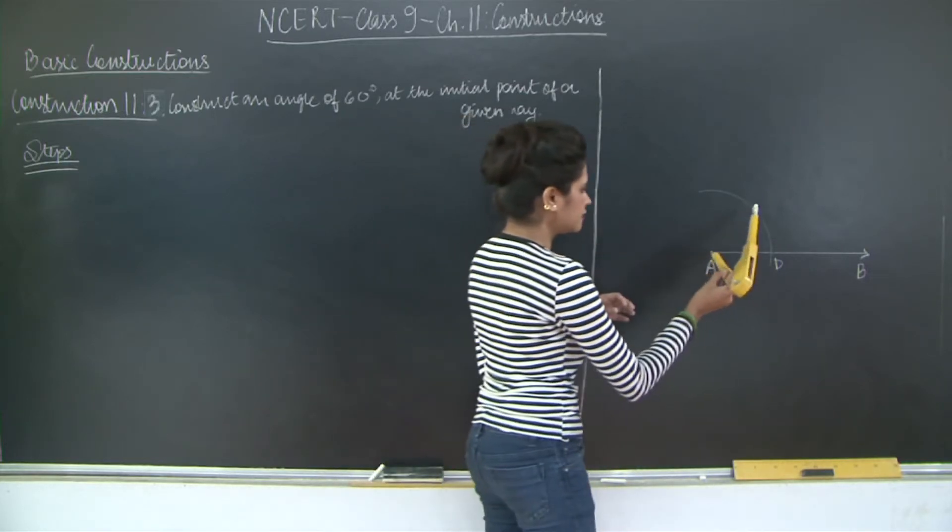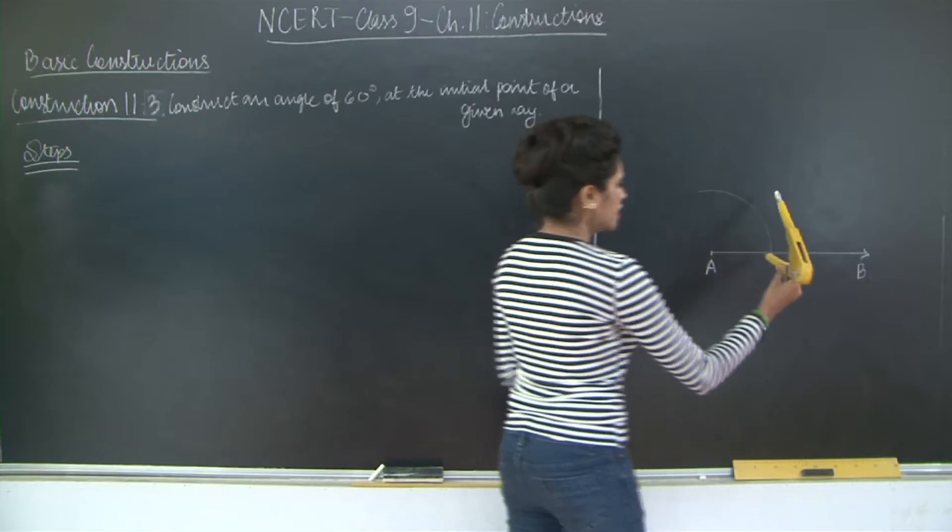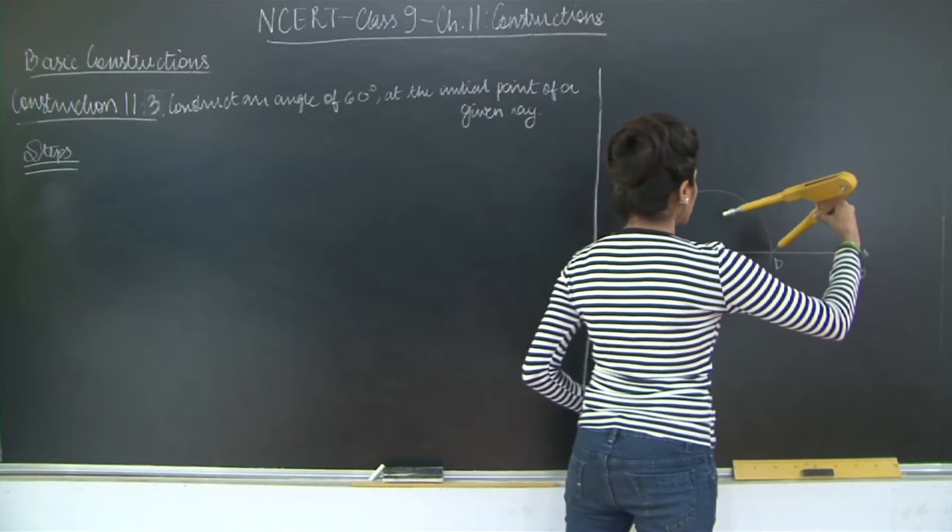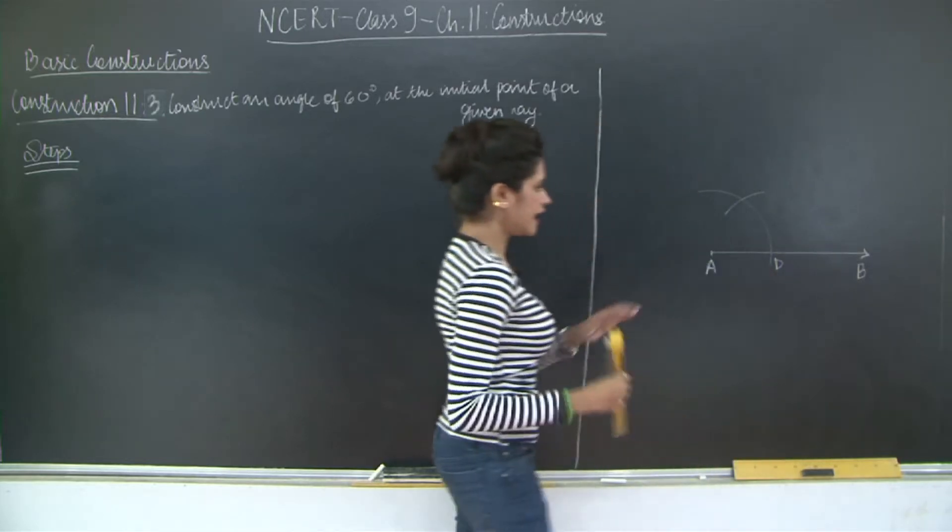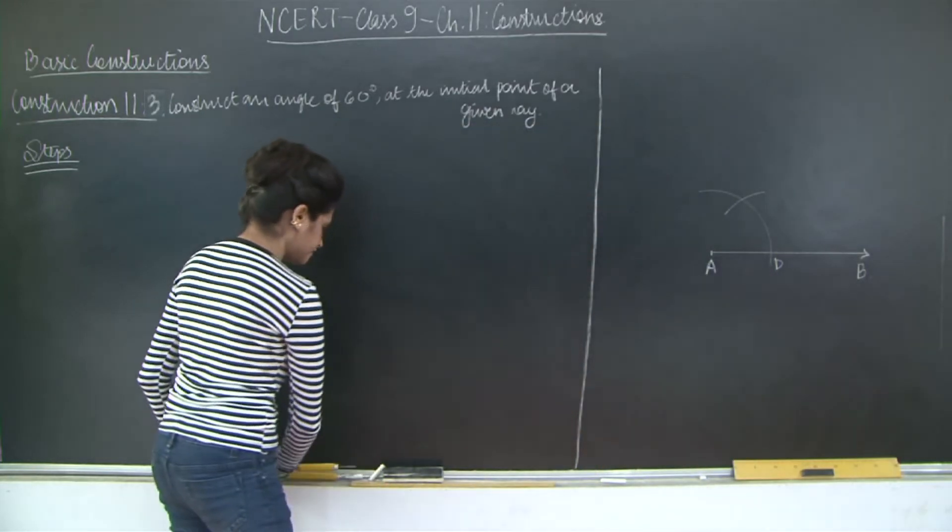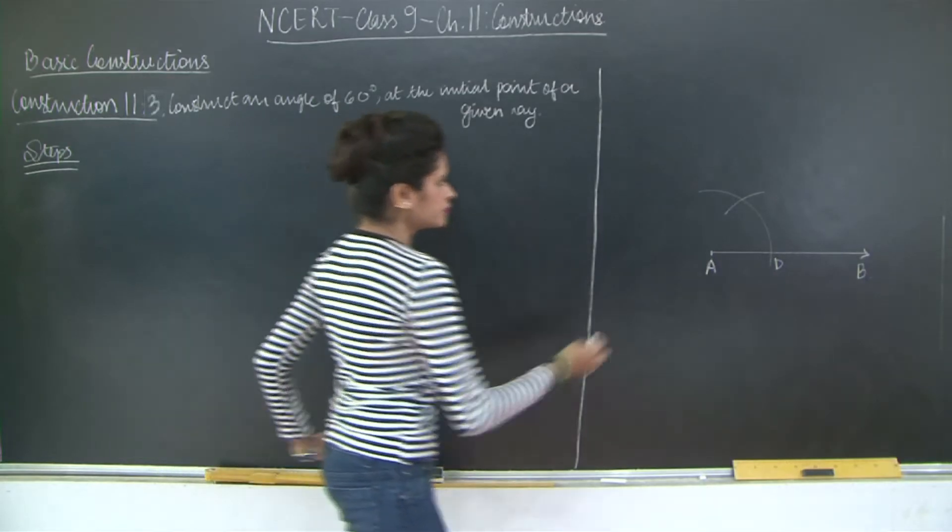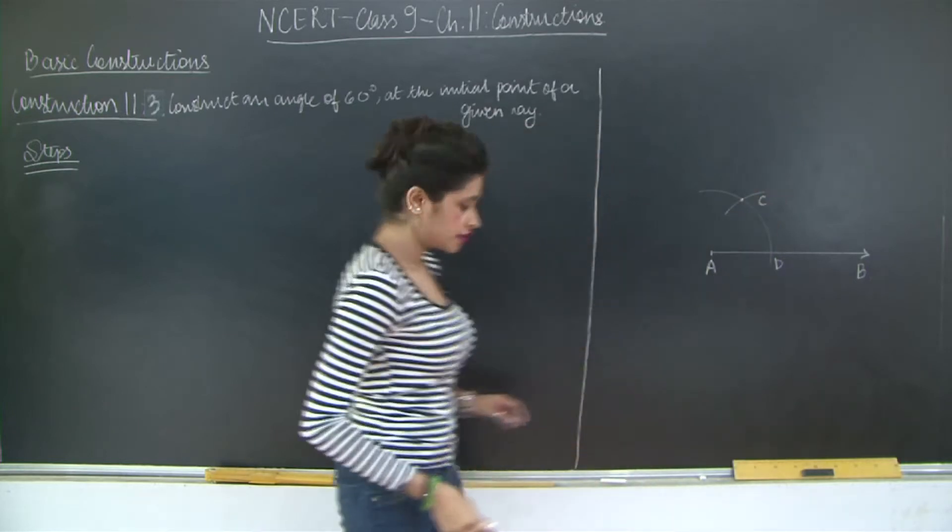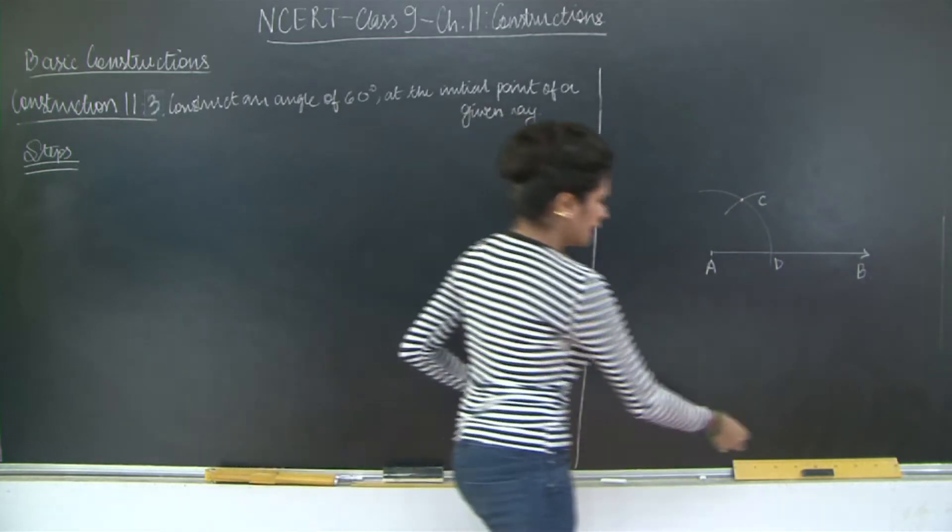Now without changing this length of AD, see this was your length AD, what you're going to do is you're going to take D as your center and you're going to intersect this arc at let's say a point C.